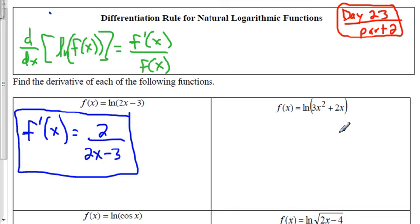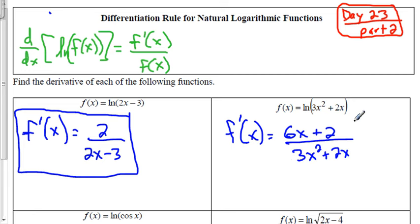Okay, the second one. The derivative of the whole thing is equal to the derivative of what we're taking the natural log of. Derivative of 3x squared is, so this is just the power rule, 6x. Derivative of 2x is just 2, and then this is all over 3x squared plus 2x. And that's our final answer.